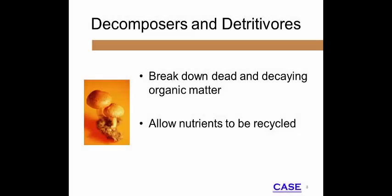When plants and animals die, there is energy and nutrients that remain in the tissues. Decomposers and detritivores break down the energy and the nutrients into inorganic compounds that may enter the nutrient cycle again.